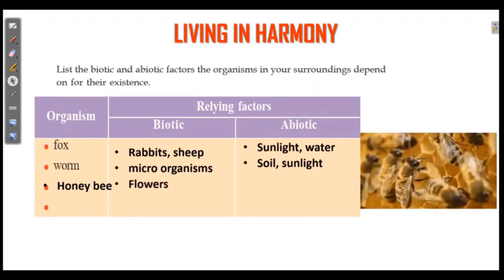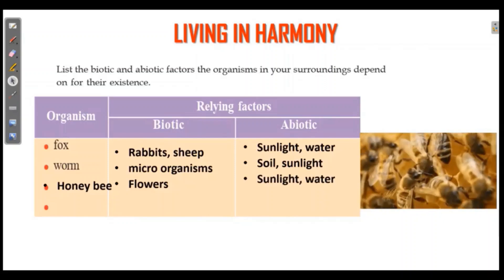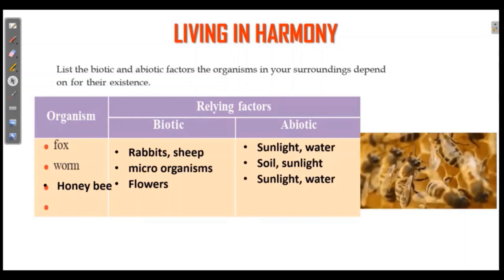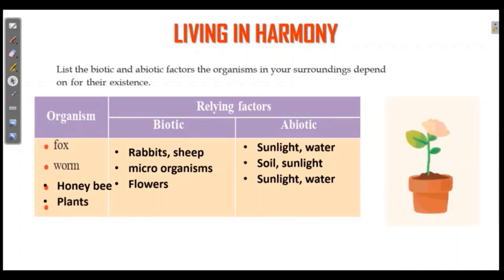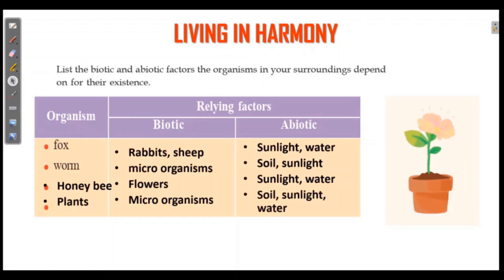Honeybee and flowers are biotic. Sunlight and water are abiotic. Honeybee, then plants are biotic. Microorganisms are biotic. Microorganisms, soil, sunlight, and water are classified accordingly.